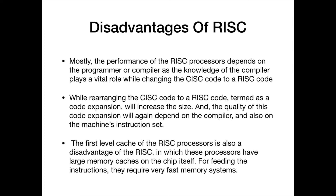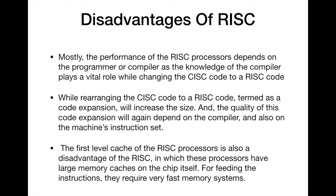Disadvantages of RISC: The performance of a RISC processor depends greatly on the code it is executing. If the compiler does a poor job of instruction scheduling, the processor can spend a lot of time waiting for results before proceeding with subsequent instructions. Another problem is code expansion — the increase in size when a program compiled for a CISC machine is recompiled for a RISC machine. RISC machines also require very fast memory systems to feed them instructions. RISC-based systems typically contain large memory caches, usually on the chip itself, known as a first-level cache.